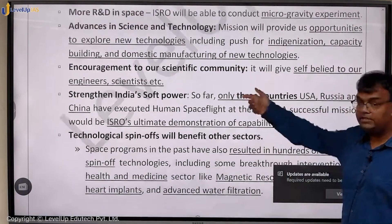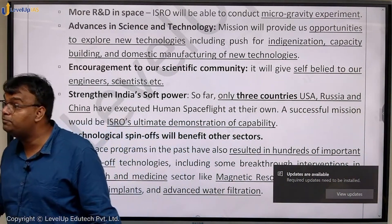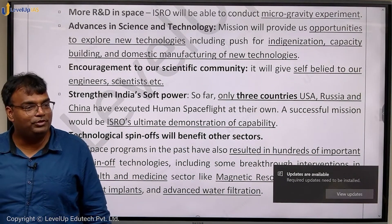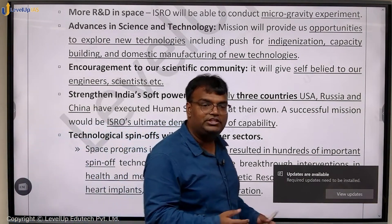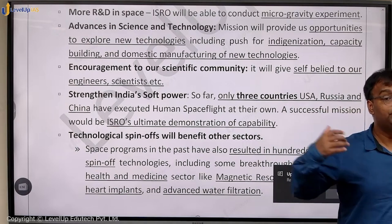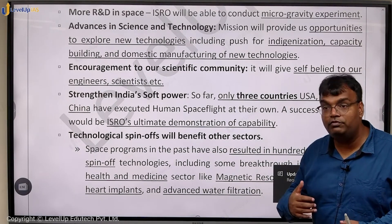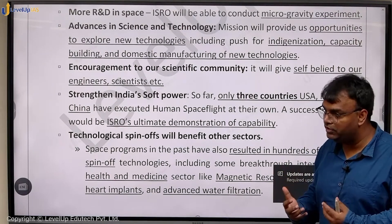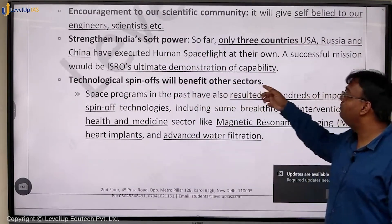Gaganyaan also encourages the scientific community. In the 1960s and 70s some scientists wanted India to explore sending humans to space, but we said no. This discouraged and demotivated scientists who felt India would not give them the same opportunity as the US or Russia. But when we are able to launch these kinds of projects, more scientists are encouraged to stay back in India, to work and contribute here. There will also be technological spin-offs that will benefit other sectors.